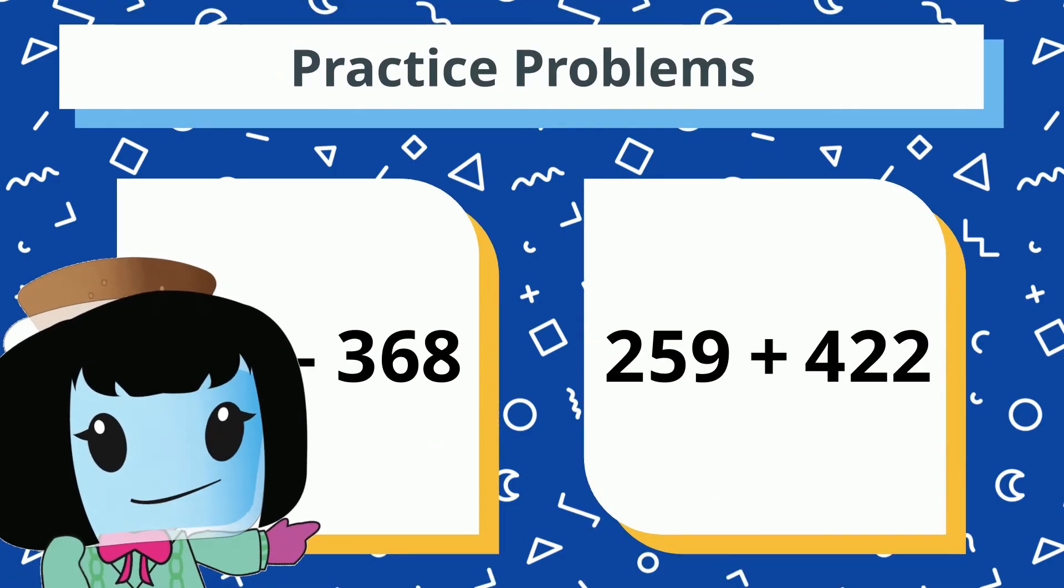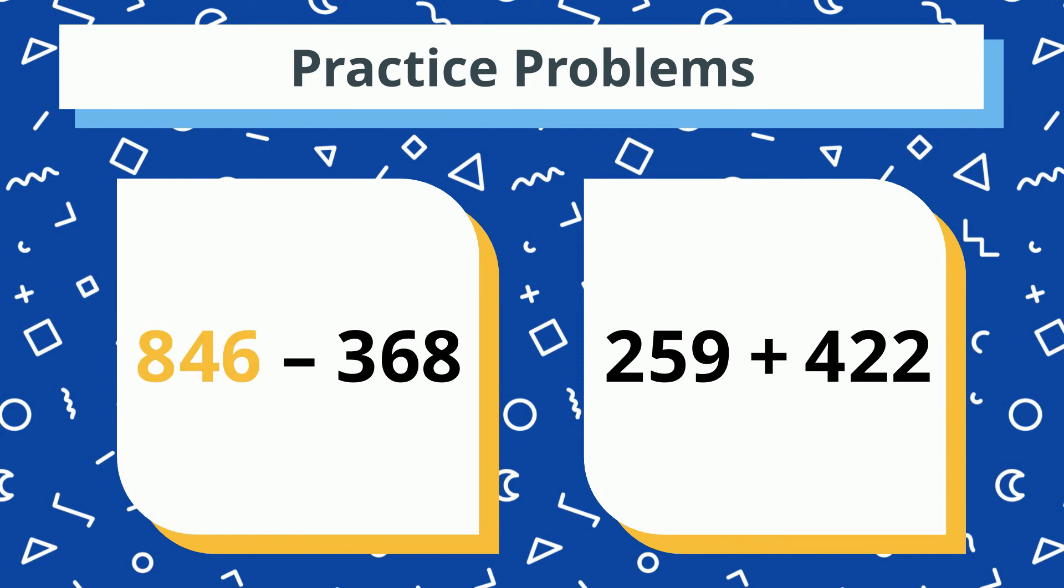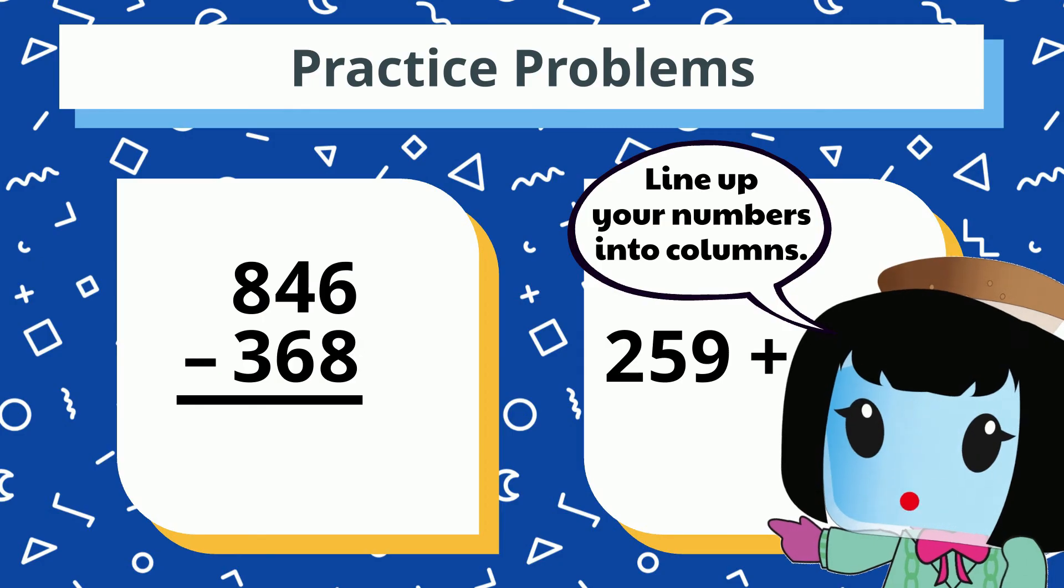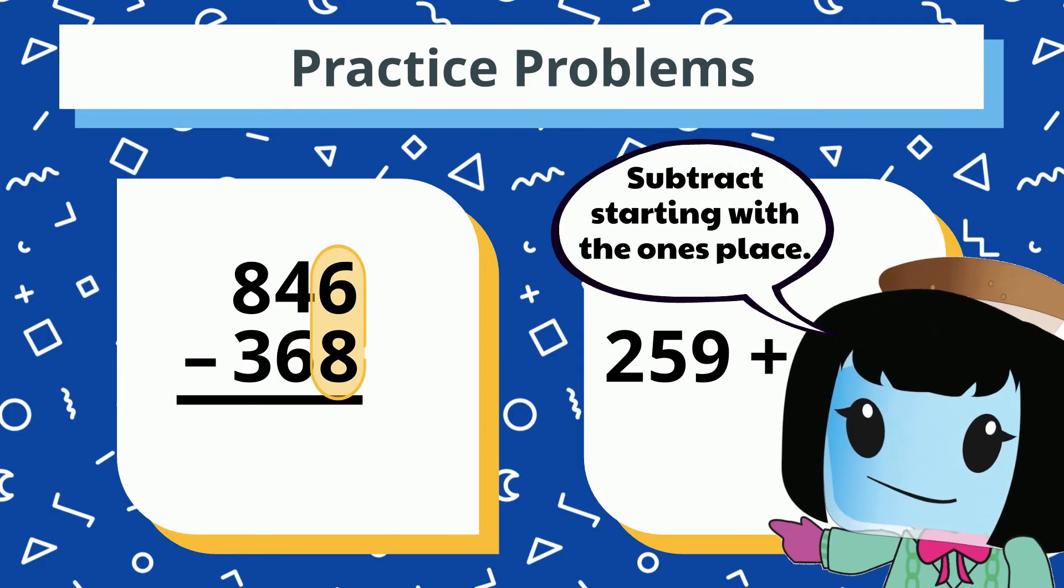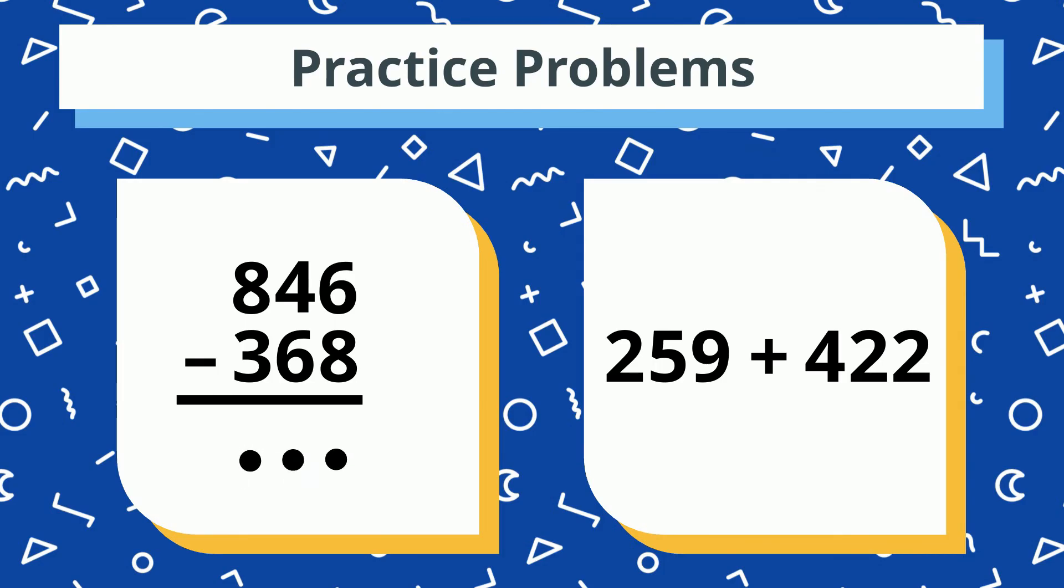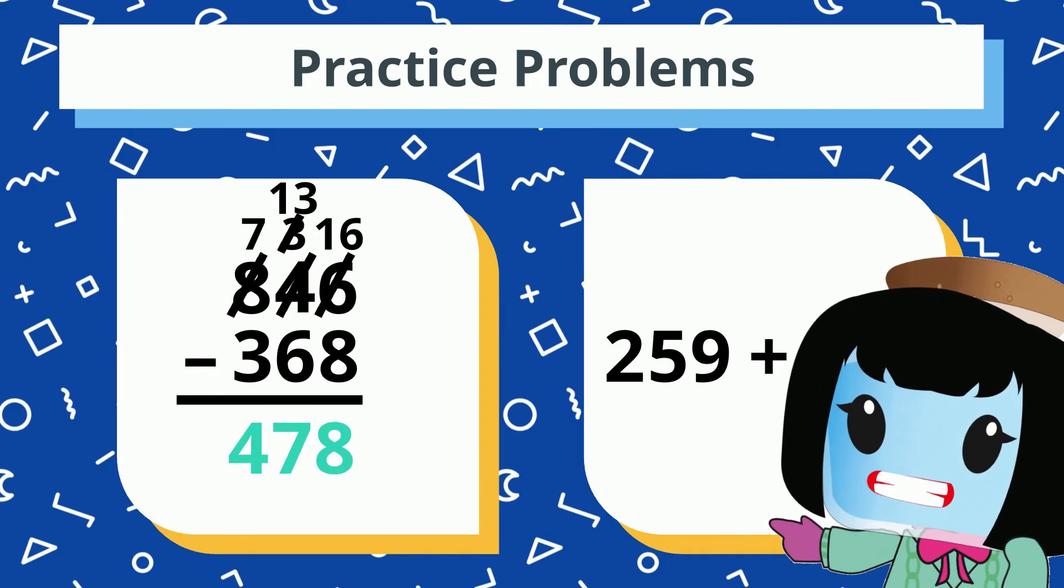Let's try a couple practice problems. 846 minus 368. Do you remember what to do? Yes. Line up your numbers into columns and then subtract, starting with the ones place. Don't forget to borrow if you have to. Did you get 478? Great job.